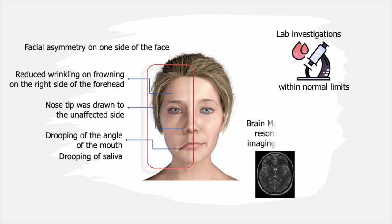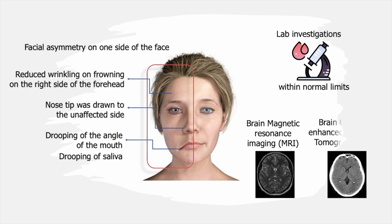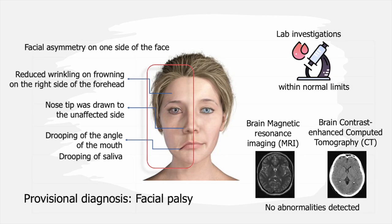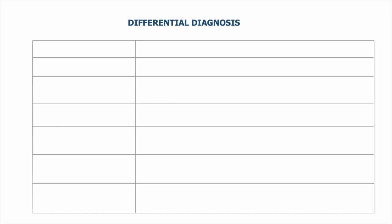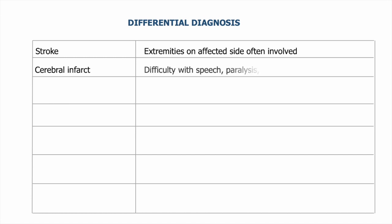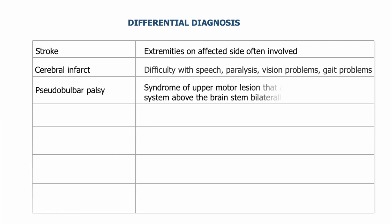Lab investigations were within normal limits. MRI and contrast-enhanced CT of the brain reported no abnormalities. A provisional diagnosis of Bell's palsy was made. Now let's exclude the differentials. Stroke also affects the extremities on the affected side, which was not seen in this case. Cerebral infarct leads to difficulty with speech, paralysis, and vision problems — none of which were seen here. Pseudobulbar palsy is a syndrome of upper motor lesion affecting the corticobulbar system above the brainstem bilaterally, whereas here it was only a unilateral presentation.